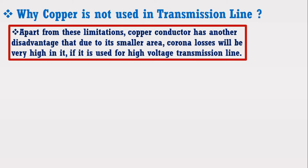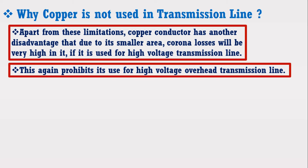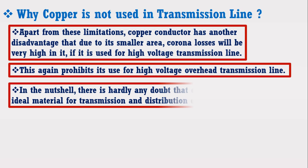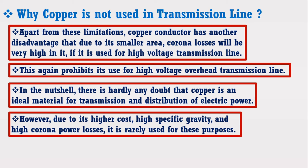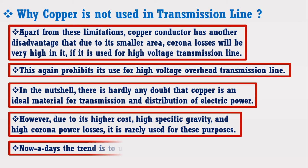Apart from these limitations, copper conductor has another disadvantage: due to its smaller cross-sectional area, corona losses will be very high if it is used for high voltage transmission lines. This again prohibits its use for high voltage overhead transmission lines. Therefore, in a nutshell, there is hardly any doubt that copper is an ideal material for the transmission and distribution of electrical power. However, due to its higher cost, higher specific gravity, and higher risk of corona power losses, it is rarely used for high voltage transmission lines.